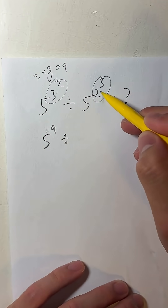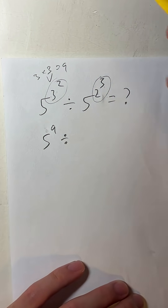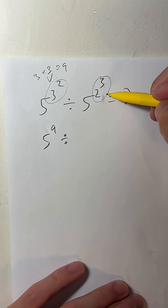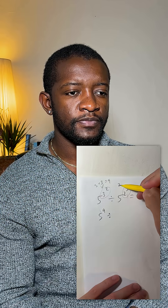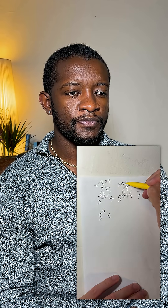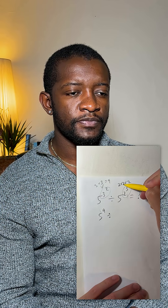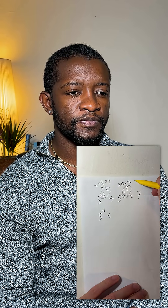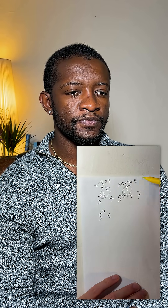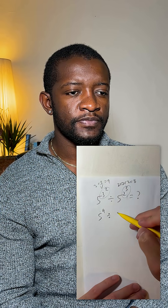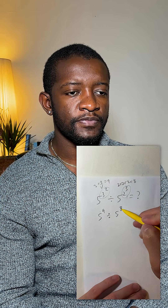Over here, we have 2 to the 3rd, which means that we're multiplying 2 three times. So this becomes 2 times 2 times 2. 2 times 2 is 4, 4 times 2 is 8. So this becomes 5 to the 8th power.